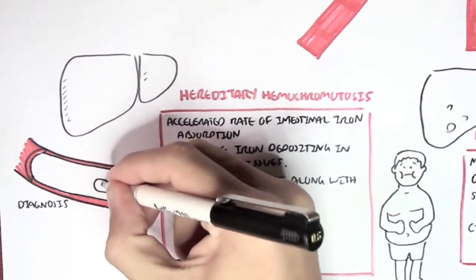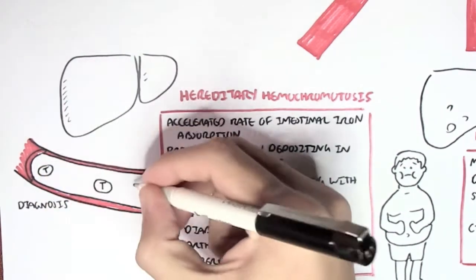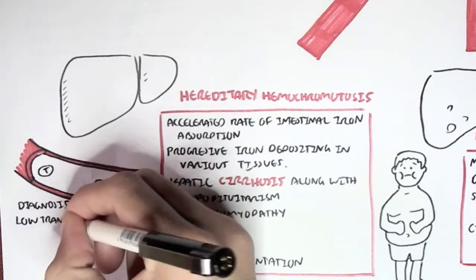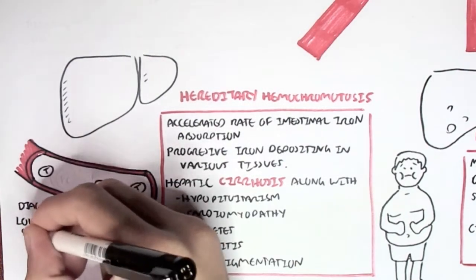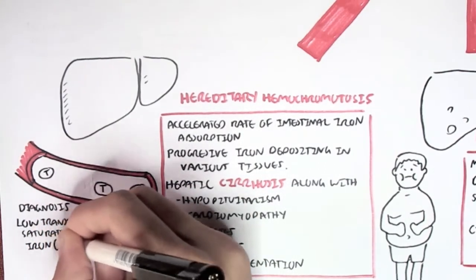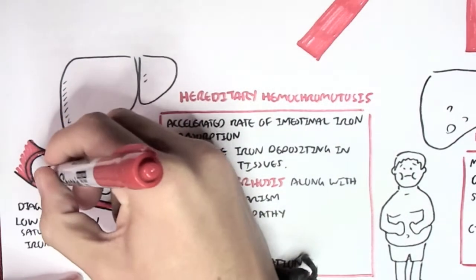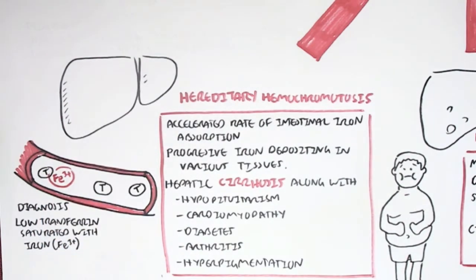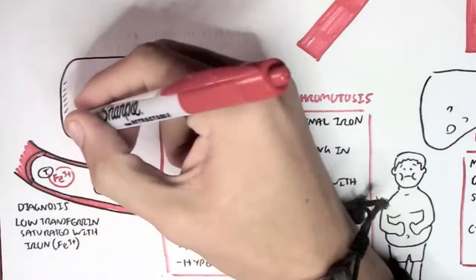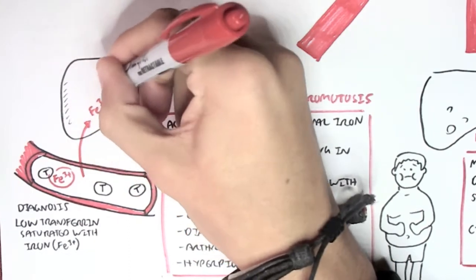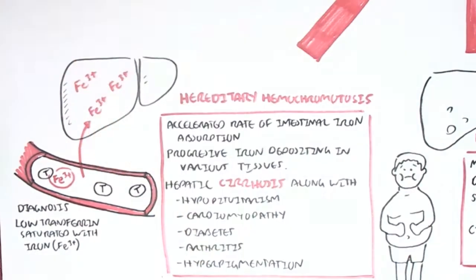To diagnose hemochromatosis, we essentially take blood and see if there is low transferrin saturated with iron. Transferrin is a carrier protein for iron. So if there is no transferrin or there is but with no iron attached to it, we can say that iron is somewhere else, accumulating in the tissues in our body such as the liver.